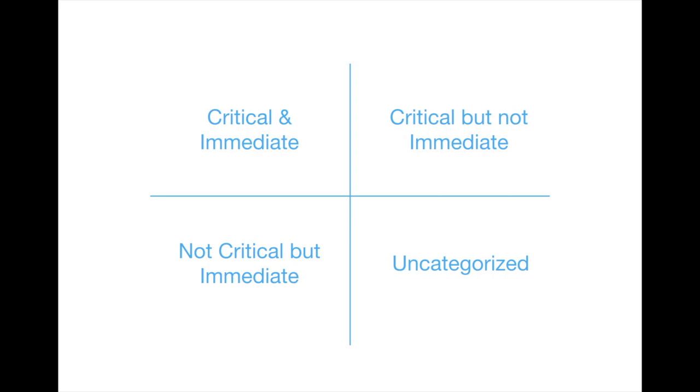Quadrant three tasks are not critical, but they are immediate. Generally, you should work to minimize the amount of time you spend on tasks in this quadrant. Either find someone else whose priorities align better with these tasks, or do them only after everything in quadrants one and two have been done.